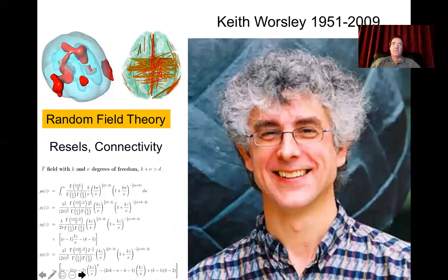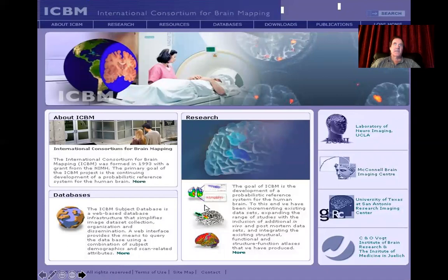Around this time, my dear friend Keith Worsley introduced random field theory, which gave us the concepts of resels — resolution elements — and connectivity, the statistical mapping of interconnectivity between brain regions. I urge those not familiar with this work to explore the beautiful elegance of this mathematical formalism. Also in the 90s, ICBM, the International Consortium for Brain Mapping, started to explore probabilistic neuroanatomy, applying the same statistical parametric approaches to anatomy rather than functional activation.